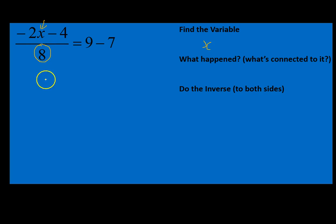So our variable is right here. I want to get rid of this 8 first. But it's kind of hard to get rid of that when I have some unresolved issues over here. So it's going to actually add an additional step. So I'll just go ahead and rewrite this entire thing out, negative 2x minus 4 divided by 8 is equal to 2, 9 minus 7 is 2.